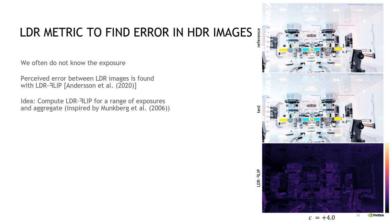The challenge with HDR images is that the renderer developer seldom knows what exposure will be used when the HDR image is displayed. When the exposure is known, we can compute the perceived error between the LDR versions of the HDR reference and test images using the perception-motivated FLIP loss. Here we denote it by LDR FLIP to make it clear that it is acting on LDR images. However, if we do not know the exposure — which we have shown has a significant impact on the displayed image — we have little knowledge of how the image will be perceived and therefore about the error in it.